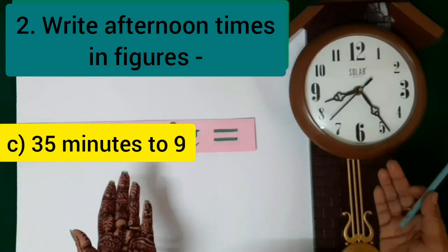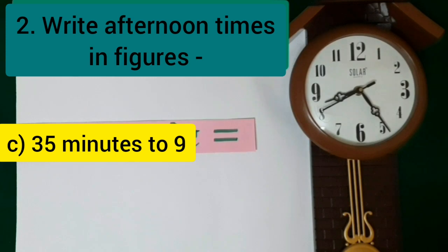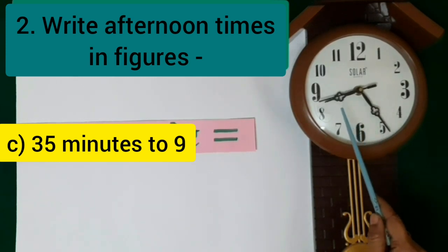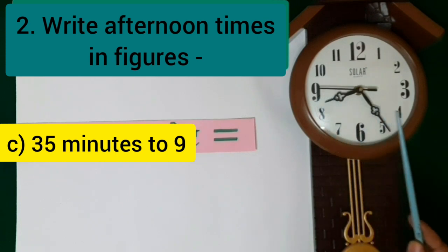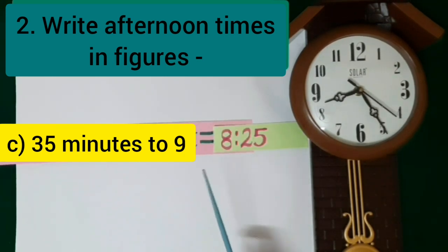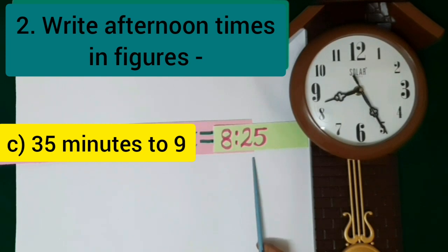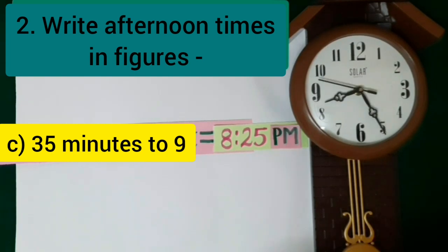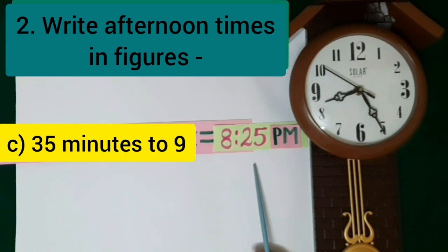In part C, 35 minutes to 9 is shown. On the clock, the hour hand is between 8 and 9 and the minute hand is at 5, showing 25 minutes. So in figures, 35 minutes to 9 is written as 8.25. The time is afternoon time, so we write 8.25 p.m.